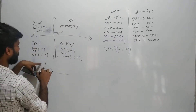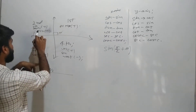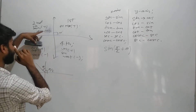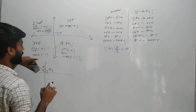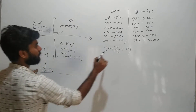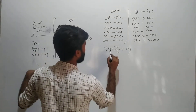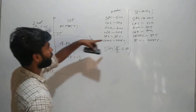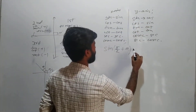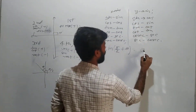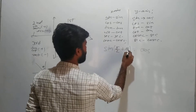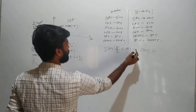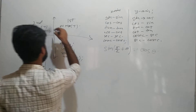In the second quadrant, sine and its reciprocal cosec will be positive and the rest will be negative. Since this is related to π/2, that is the y-axis, sine will change into cos. So sine(π/2 + θ) = cos θ, and this will be positive because we are in the second quadrant.